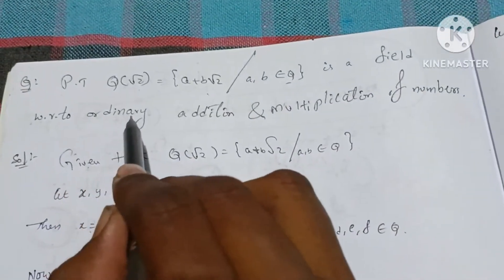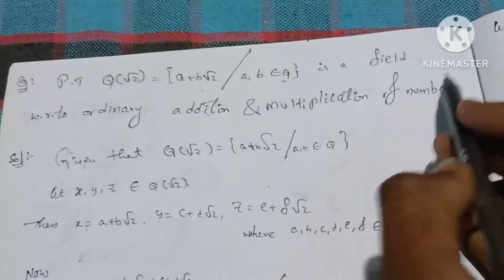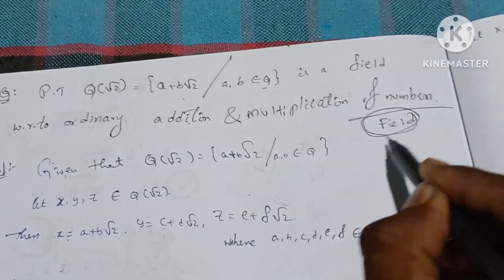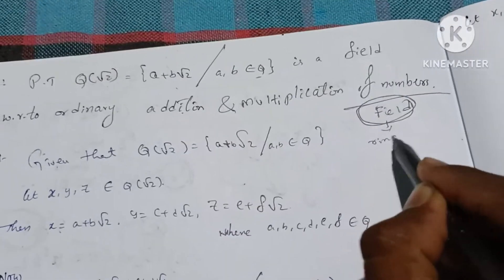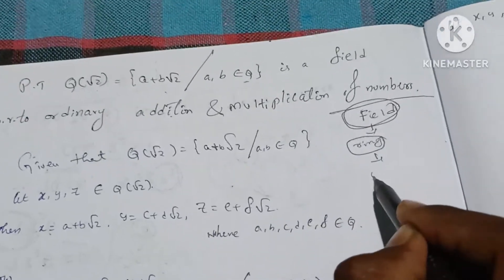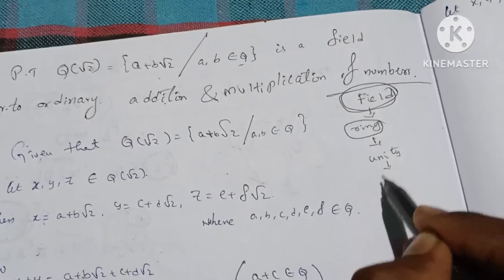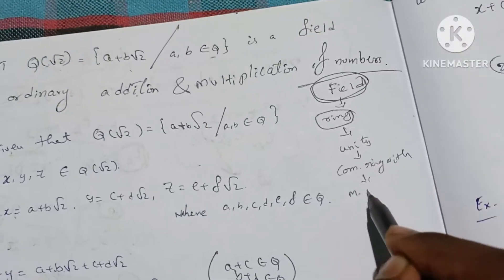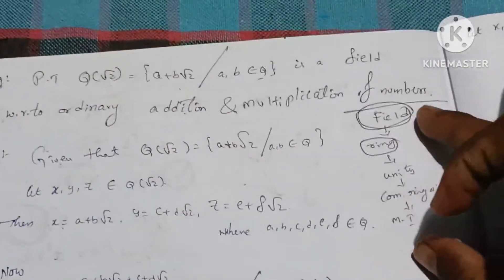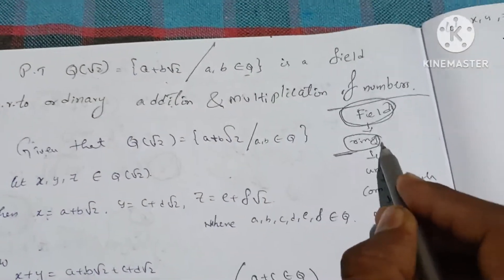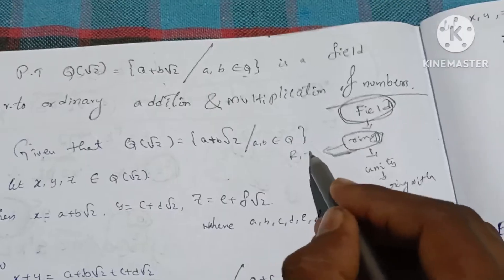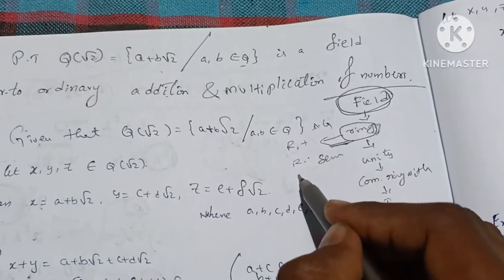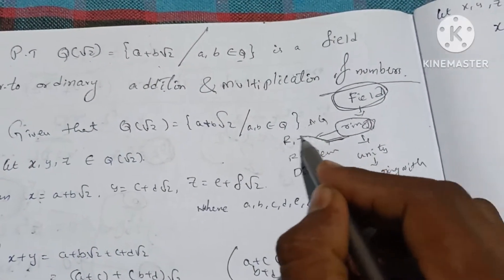Let's check that this is a field with respect to ordinary addition and multiplication. We check the ring conditions first, then the commutative ring with unit, and finally whether the multiplicative inverse exists. The three conditions for a ring are: R with plus is an abelian group, R with dot is a semigroup, and the distributive law holds.